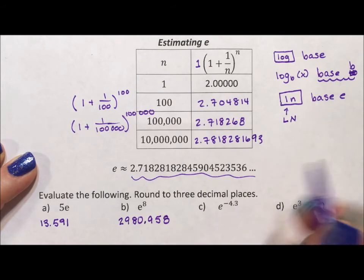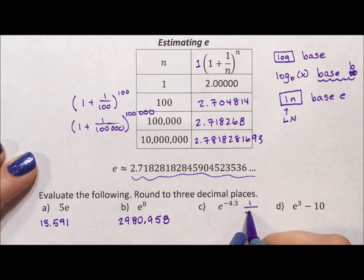Remember, a negative exponent means division, so this is really the equivalent of 1 over e to the 4.3. You can plug it into your calculator with a negative, but this is to give you the idea that this number is going to end up small, and it does. It becomes 0.014.